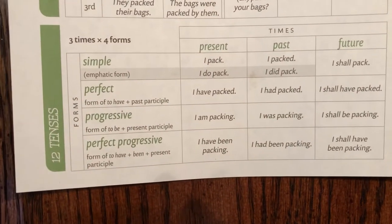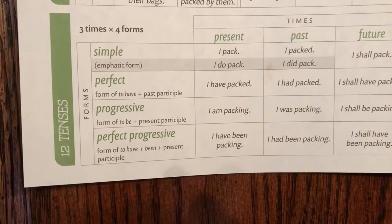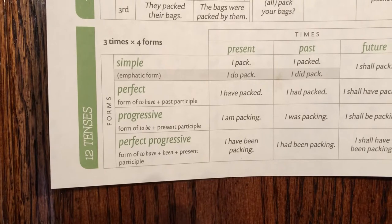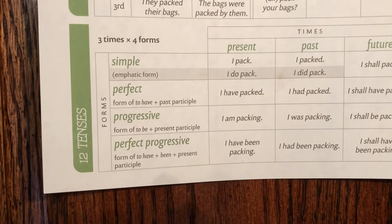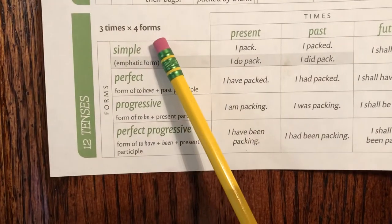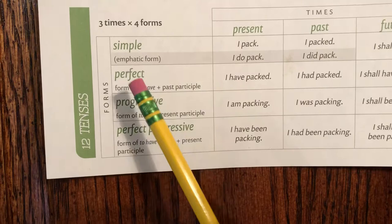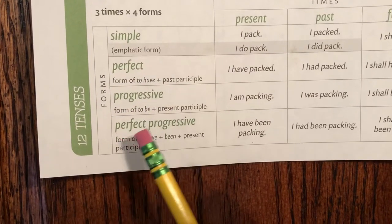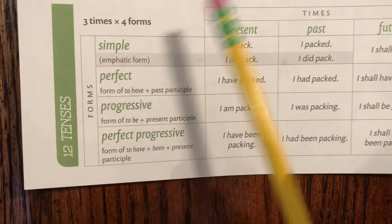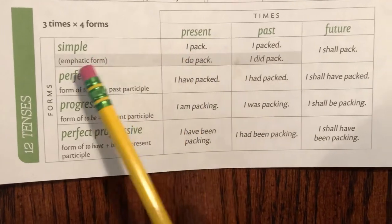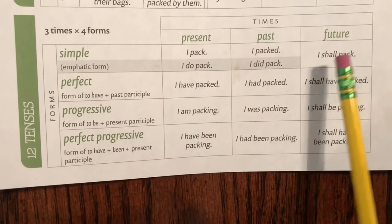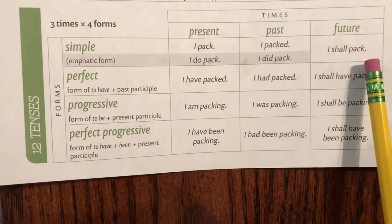All right, this is verbs chart C — 12 tenses. 12 verb tenses, time by form: simple, perfect, progressive, perfect progressive. Simple present: I pack. Simple past: I packed. Simple future: I shall pack.